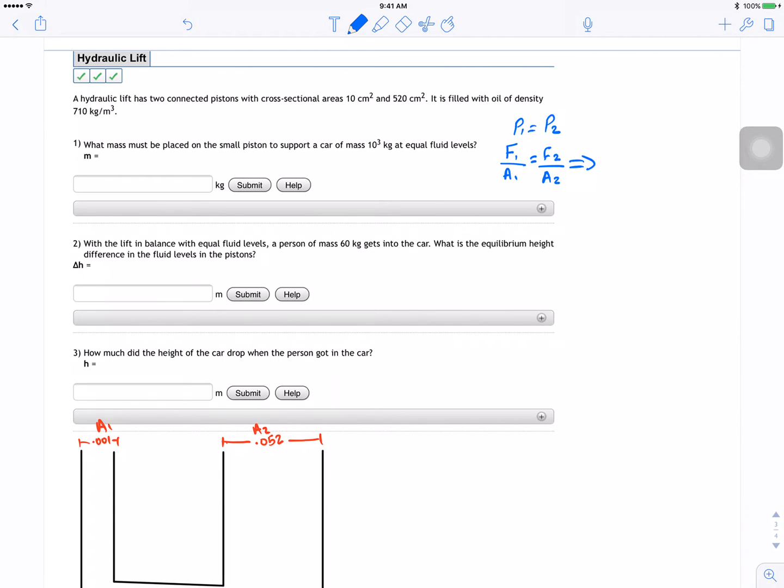From there we go, the force 1 is going to be M1 G divided by A1 is going to be equal to M2 G divided by A2. Cancel the G's out, so M1 was, actually we're finding M1, we need to find M2.